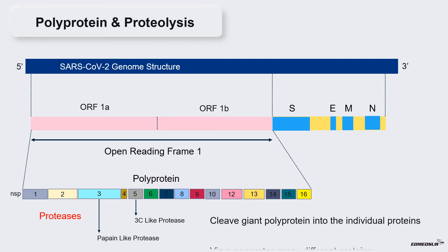This way, virus generates many different proteins from one initially translated polyprotein.